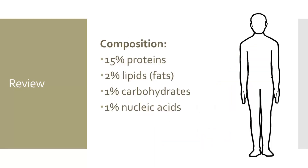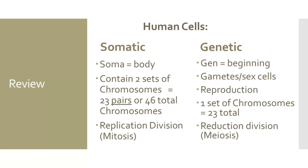We should also review basic body composition. The human body is composed of 15% proteins, 2% lipids or fats, 1% carbohydrates, and 1% nucleic acids. The other 80% of your body is water. This is important to know, but I'll tell you why later. First, I want to review the types of living cells within your body. Human cells are divided into two main groups: somatic cells and genetic cells.